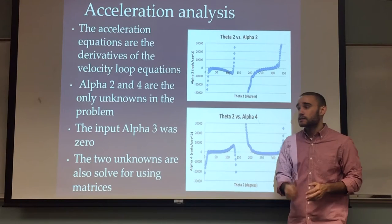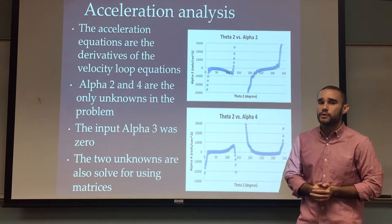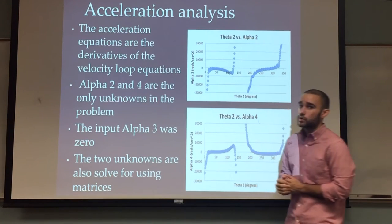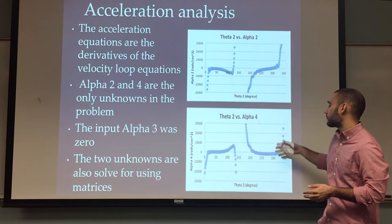Acceleration, again it's the same process as the velocity. It'd be the derivative of the velocity loop equations and using matrices to solve for your two unknowns, in this case alpha 2 and alpha 4.